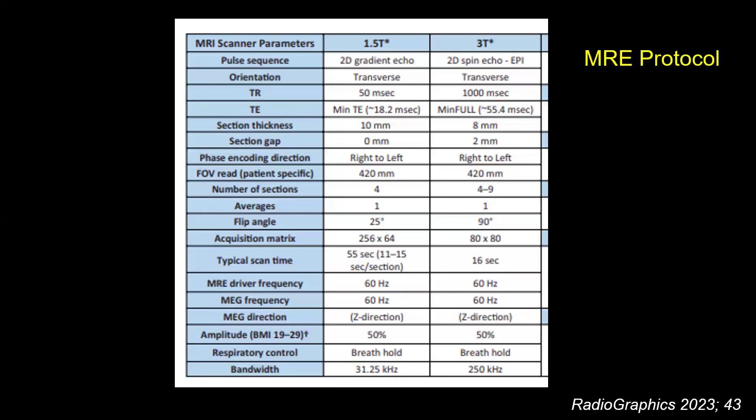As for protocols, we have different protocols for 1.5 Tesla and 3 Tesla. For 1.5 Tesla, you use a gradient echo sequence, and the acquisition time is close to a minute, yielding only four slices. For 3 Tesla, you preferably use a spin echo sequence, with acquisition time down to only 13 to 16 seconds and up to 9 images. The settings differ between the two, but the end result is nearly similar.